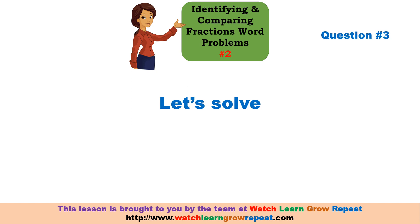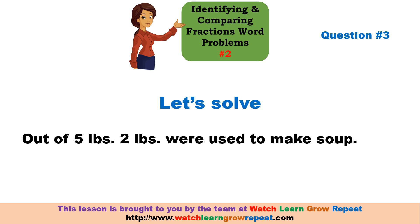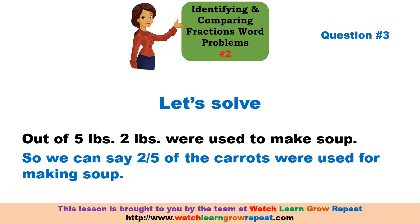Let's solve this. We have been told that out of the five pounds of carrots, two pounds were used to make soup. So we can say that 2/5 of the carrots were used to make soup.